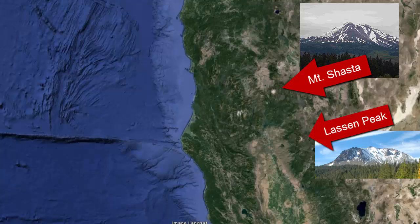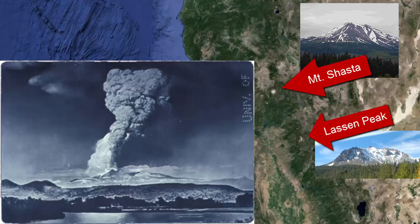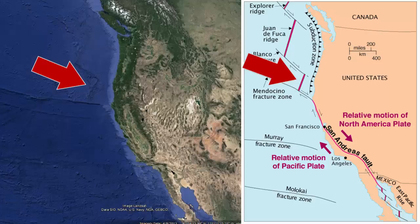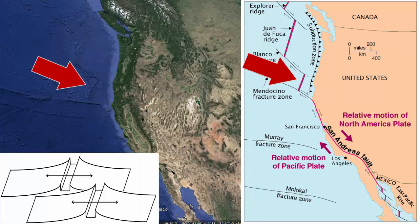The most recent eruption in that area was the explosive eruption depicted in this image of Mount Lassen on May 22, 1915. What happens to the seafloor spreading center off Northern California?